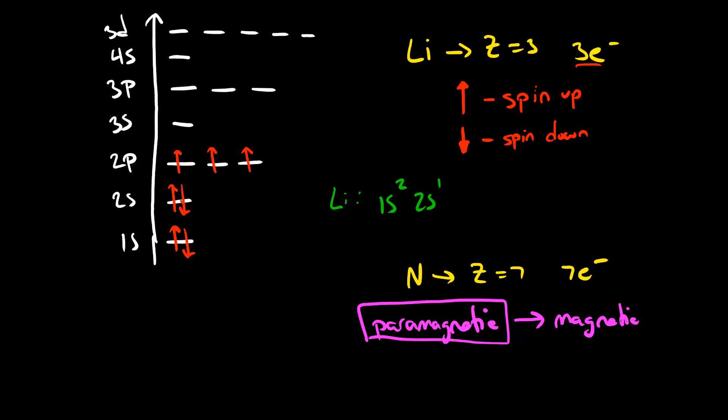Translating the energy level diagram to an electron configuration, nitrogen is 1s2, 2s2, 2p3. This is the electron configuration for nitrogen. It corresponds to an energy level diagram that looks like this, and it's the energy level diagram that can help us understand that nitrogen has unpaired electrons, making it paramagnetic.